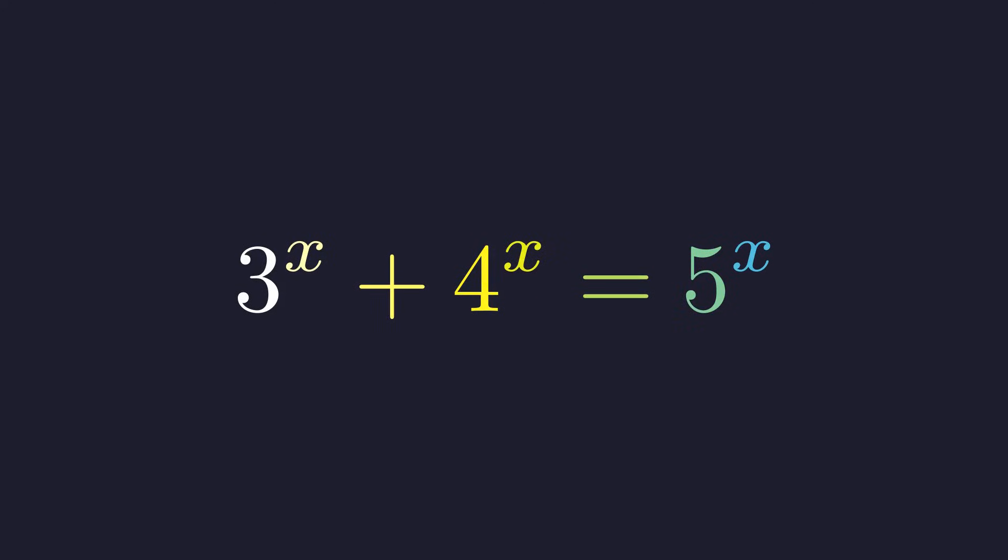This equation looks a lot like the Pythagorean theorem, but with a variable exponent. We need to solve for x in the equation 3 to the power of x plus 4 to the power of x equals 5 to the power of x.